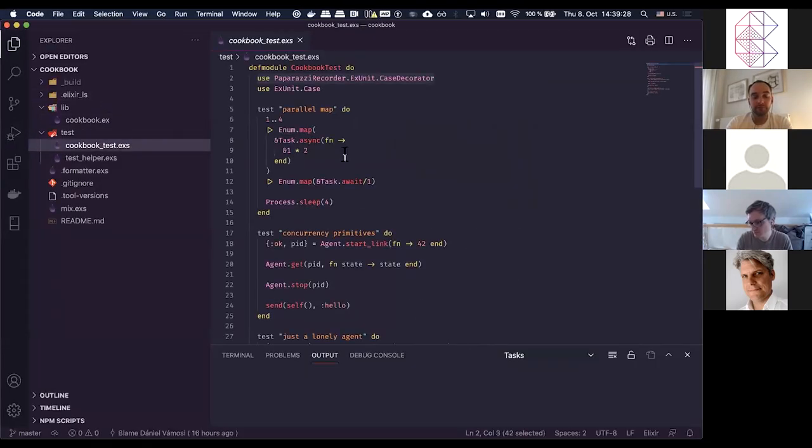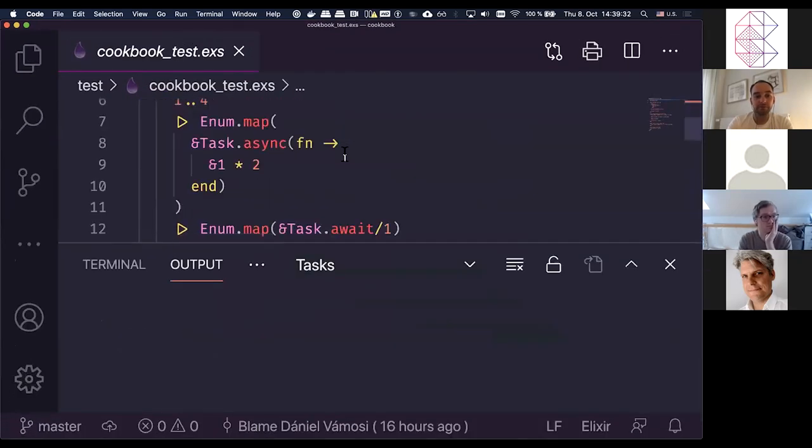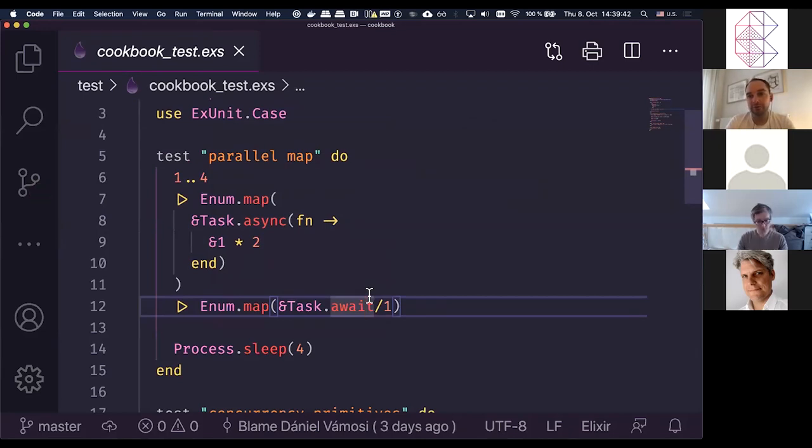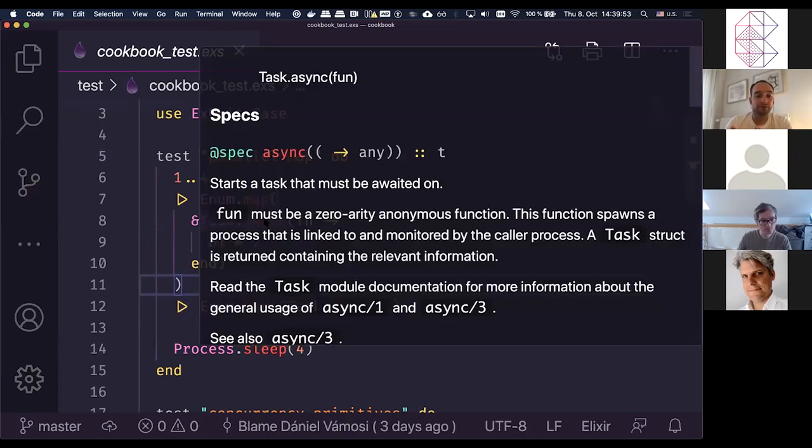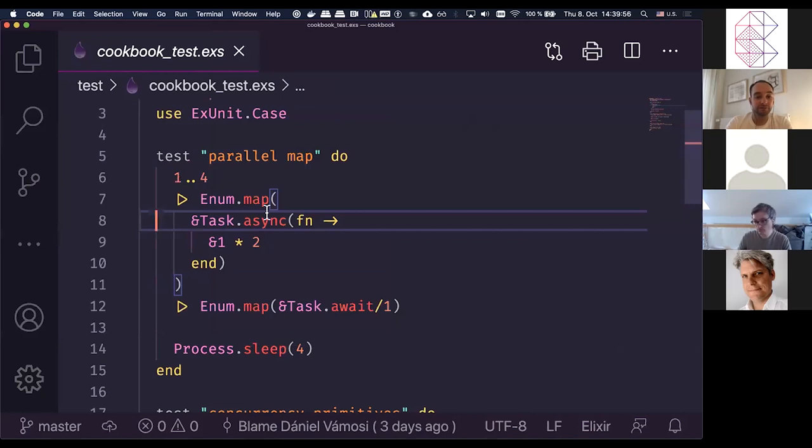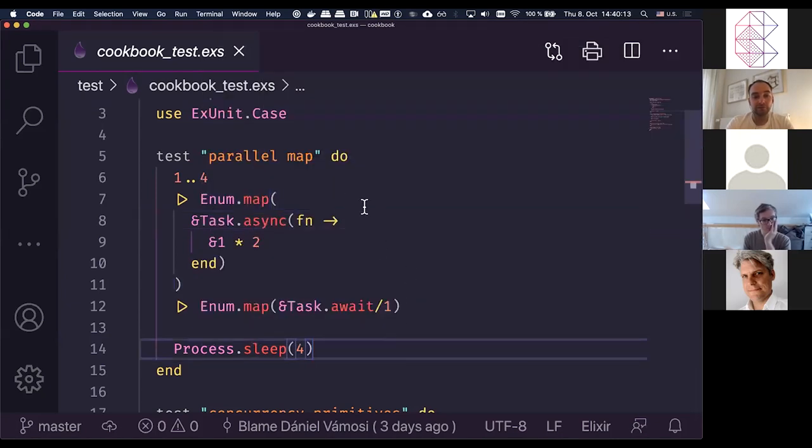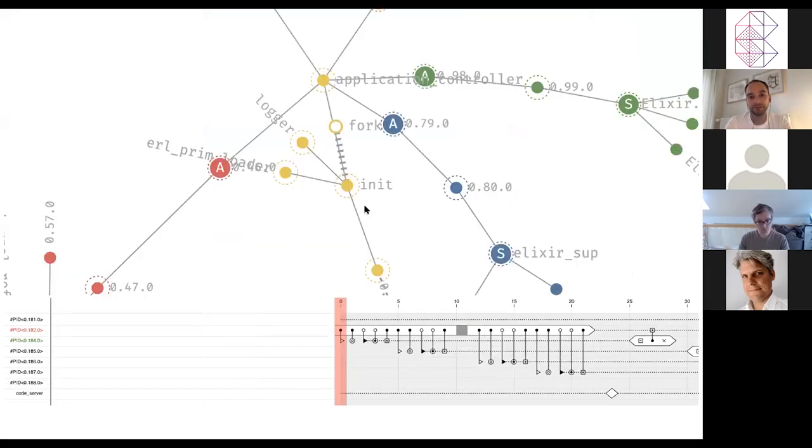This example shows a runtime behavior of a parallel map. Hopefully it's visible well. Parallel map, we all know parallel map, this is one of the classical examples which shows the capabilities of the concurrency behavior. So what it does is that it starts four processes. For each process, it uses a task, which is a behavior defined by Elixir on top. It duplicates each of the elements that are passed through it, then awaits for it, and then tears down the whole parallel map. Let's have a look how does this look in Paparazzi itself.